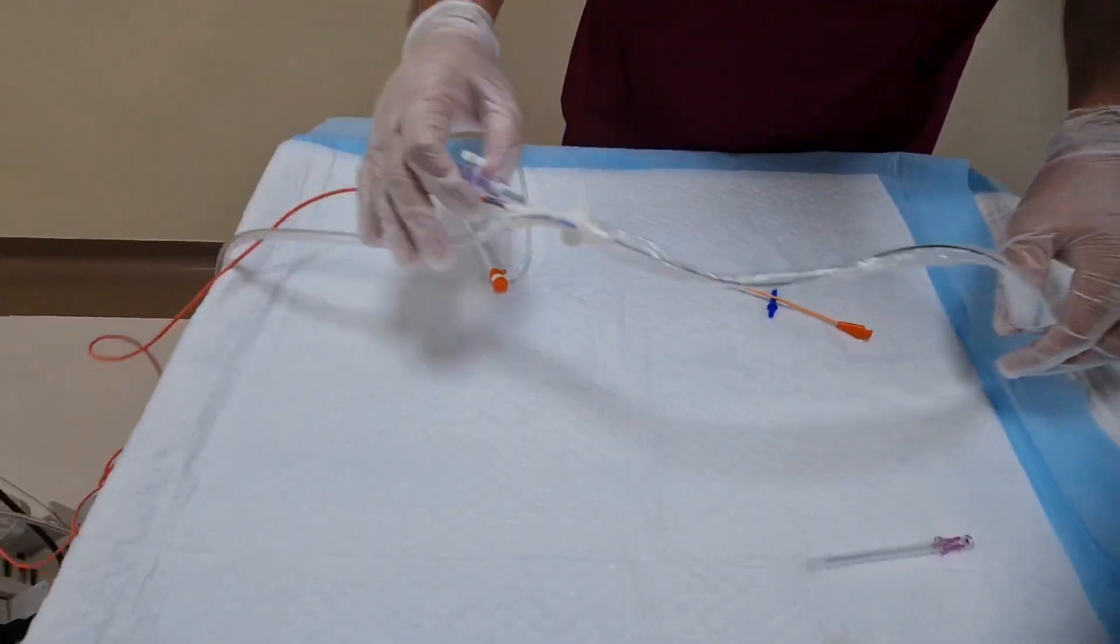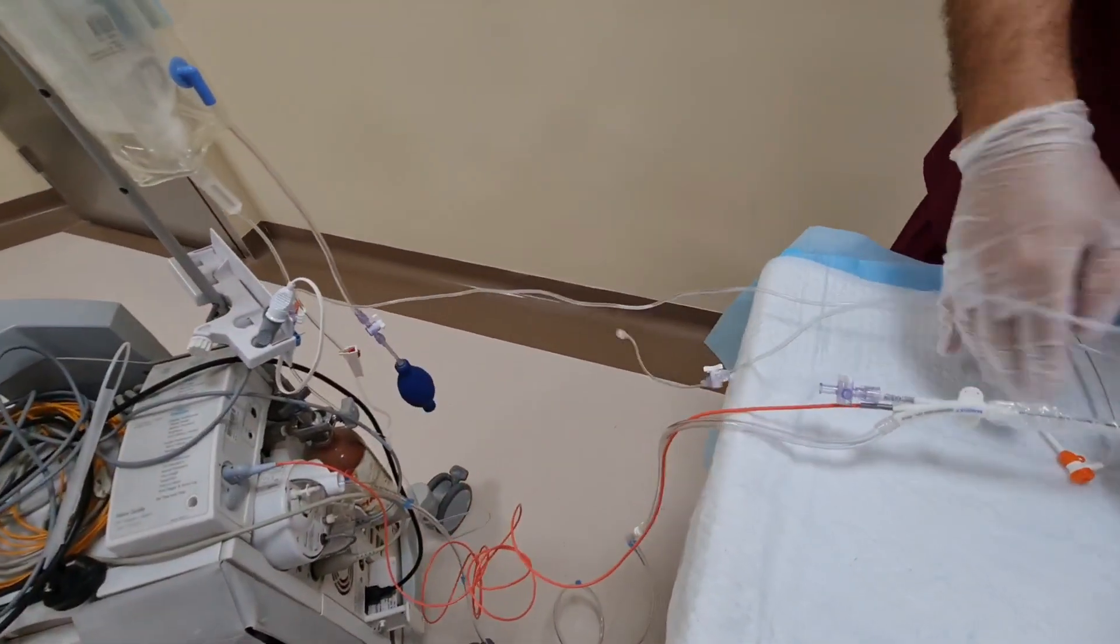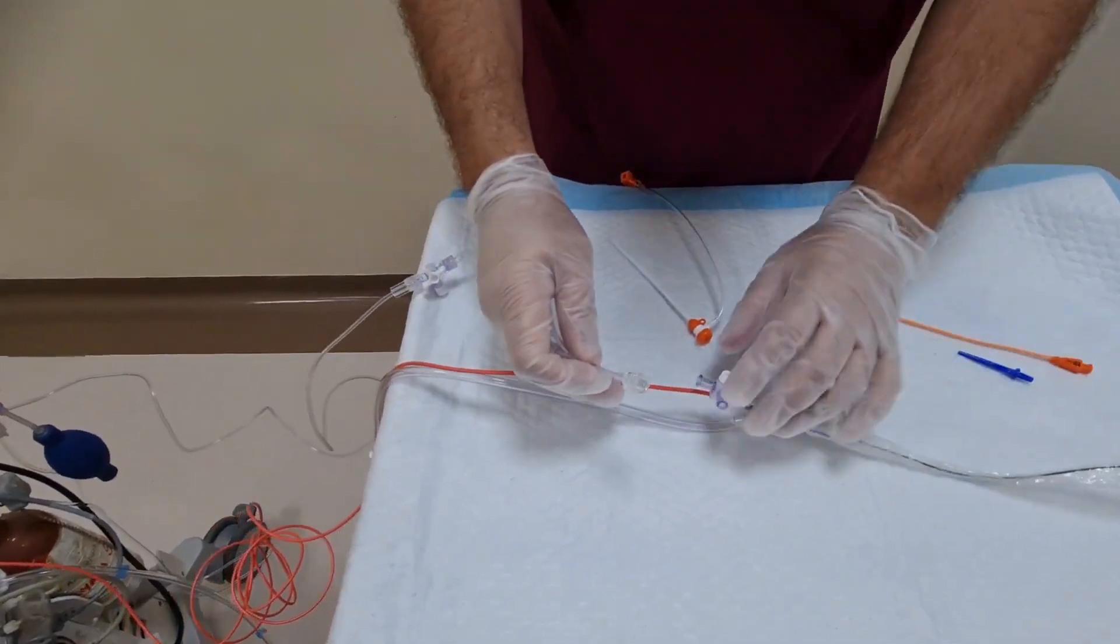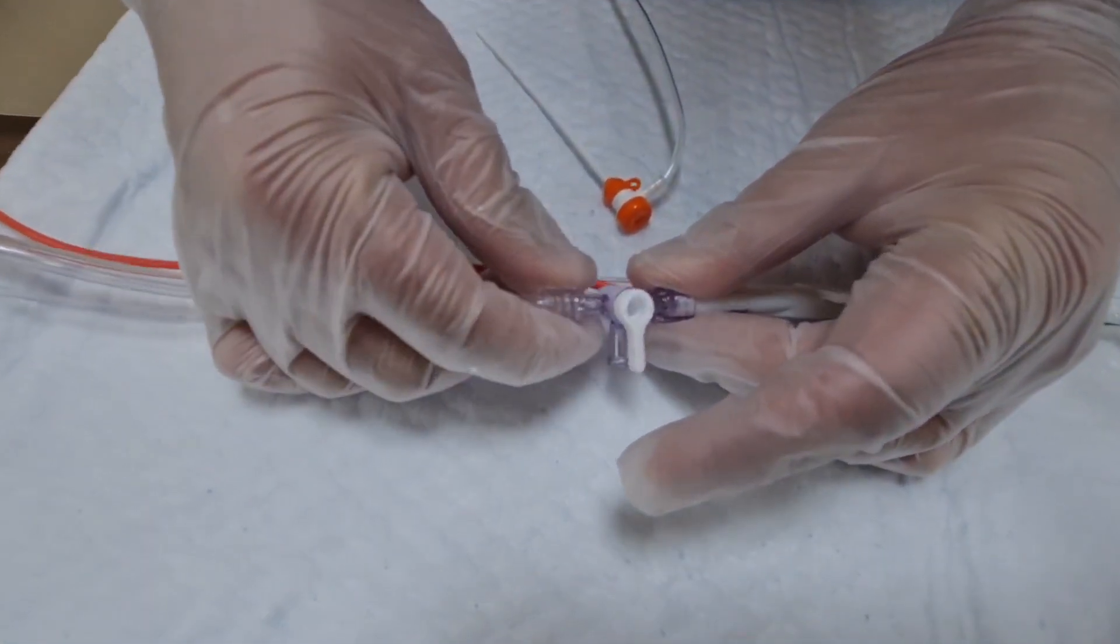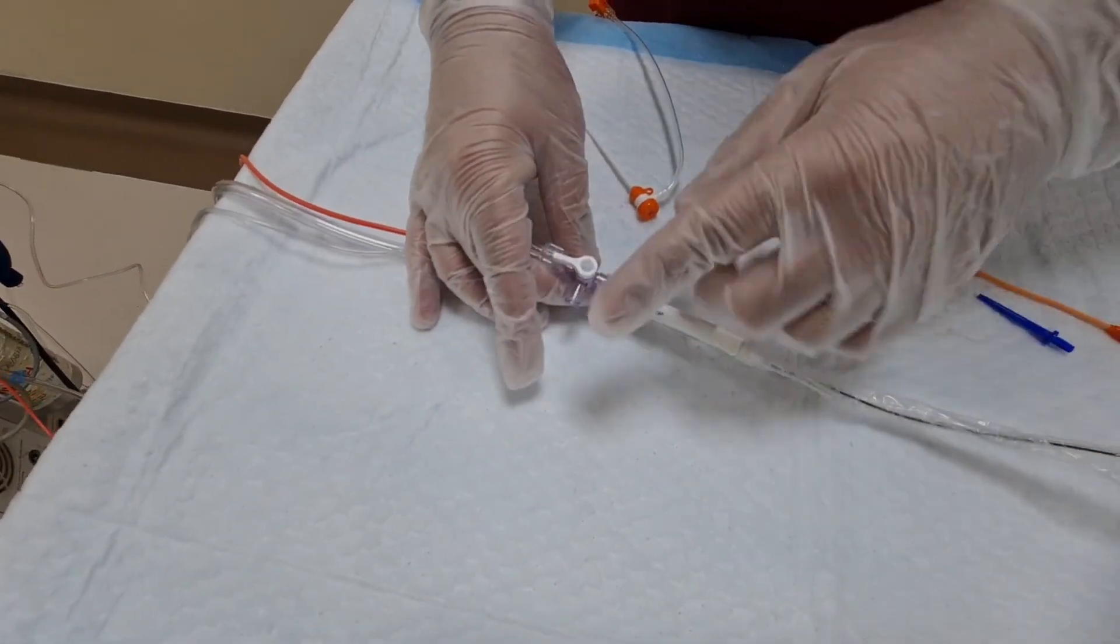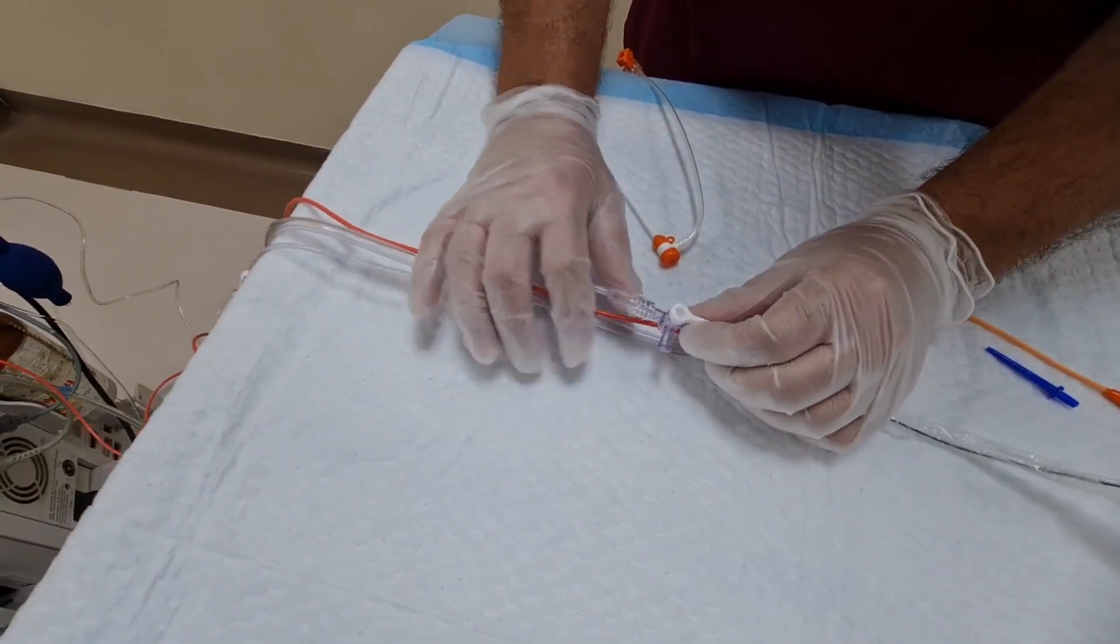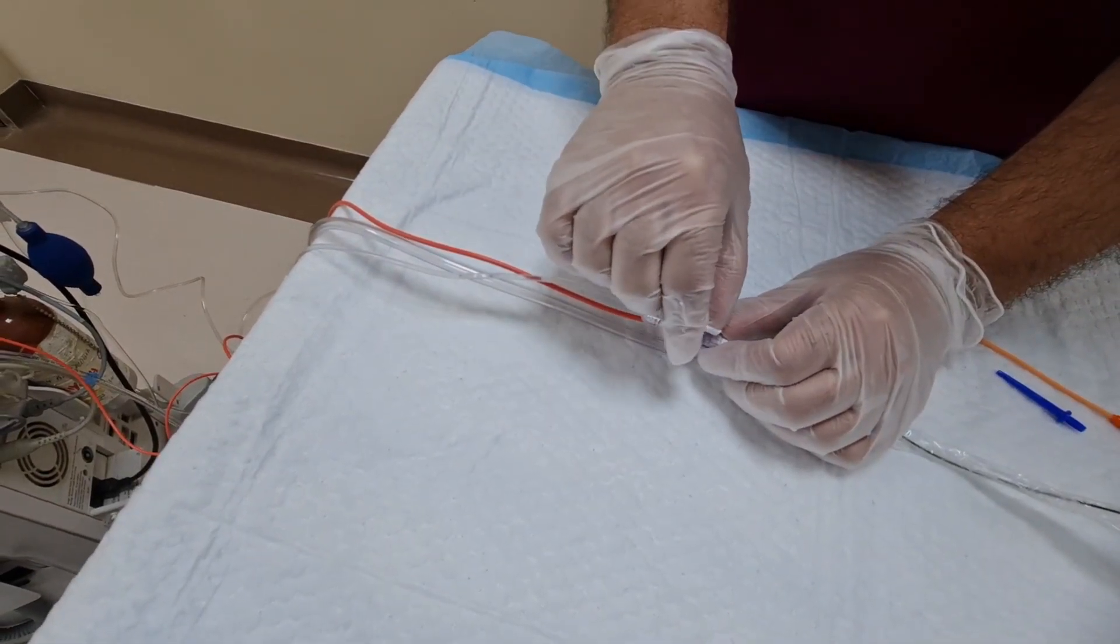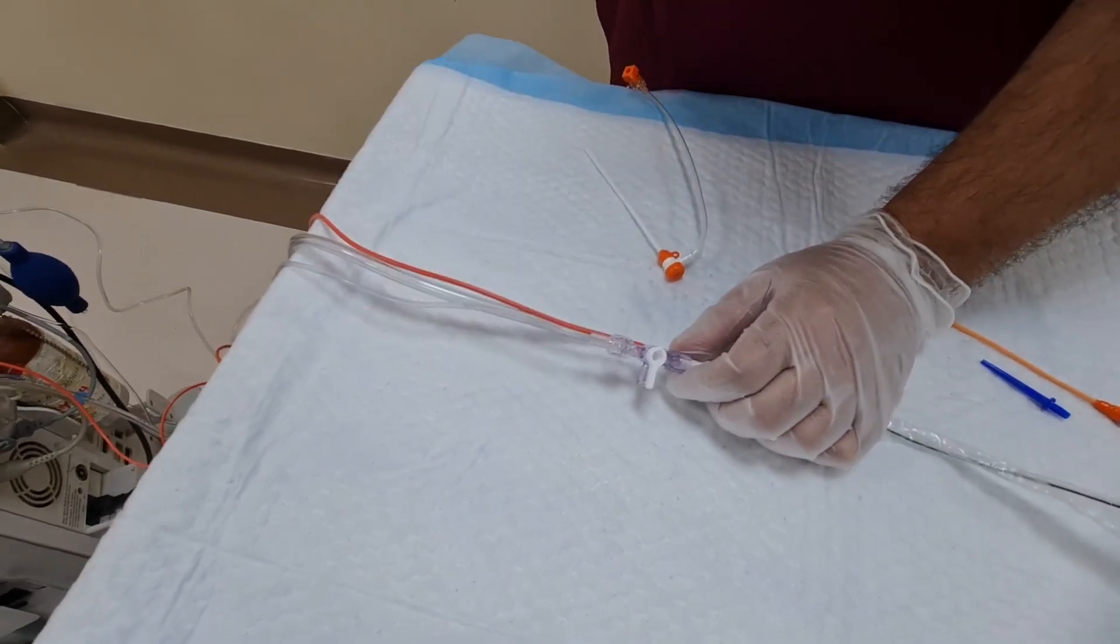After getting the machine ready, as we mentioned earlier, the heparinized line should be ready. The total procedure is in a sterile way. Connect this pressure line to this three-way stopcock and aspirate it first to avoid any air bubble. Then flush it from the pressurized bag to remove the air, then lock it. Now it's air-free totally, so we have the pressure on the IABP.